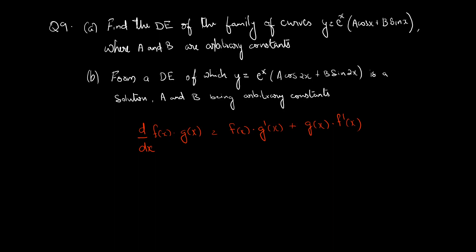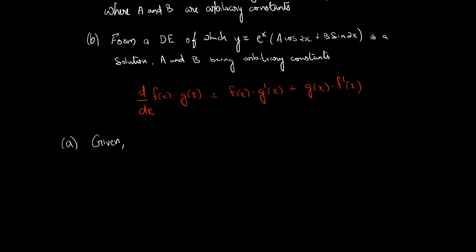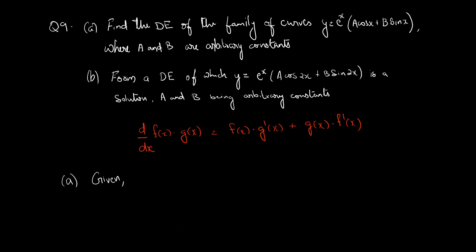Going to part a. Given: y equal to e raised to x into a cos x plus b sin x. This is our equation 1 — the given relationship between the dependent and independent variable.